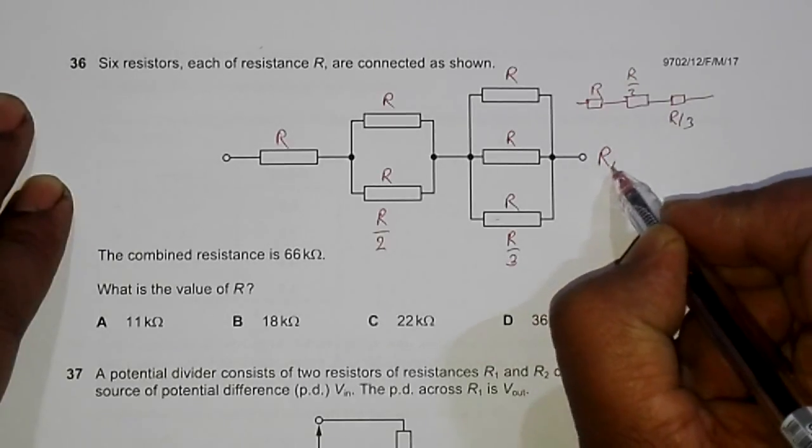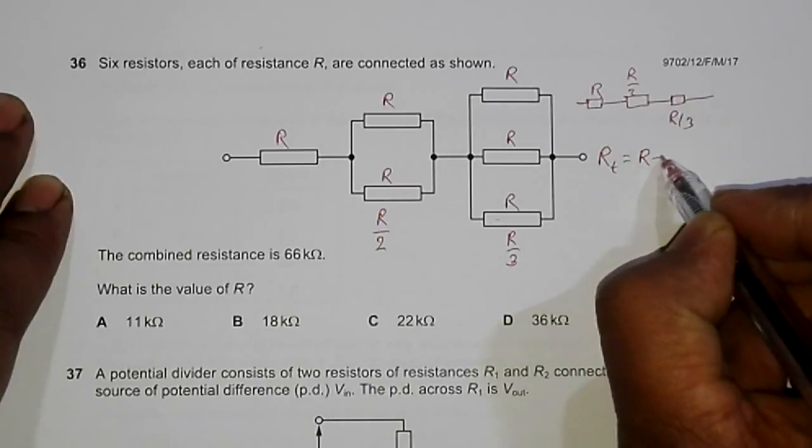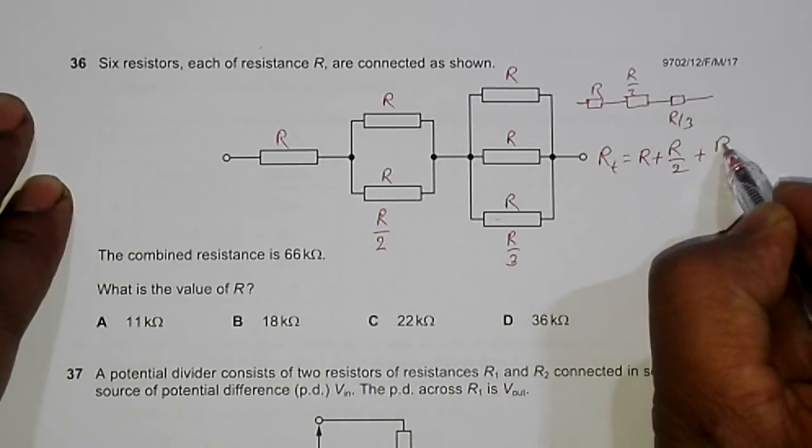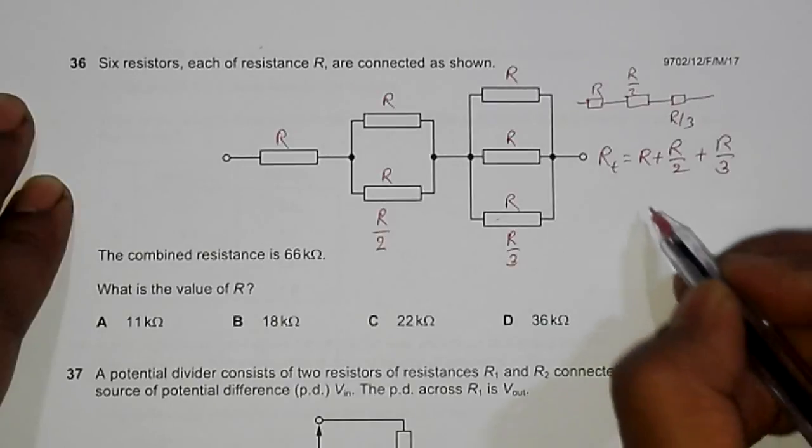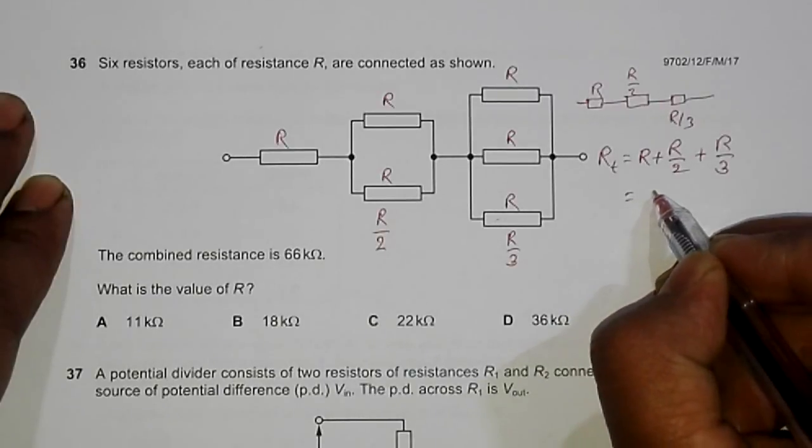The total resistance R_total is equal to R plus R/2 plus R/3, and that's equal to 66 kilo ohms.